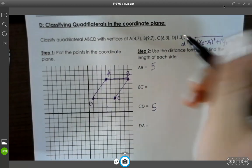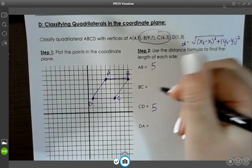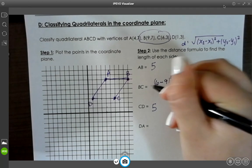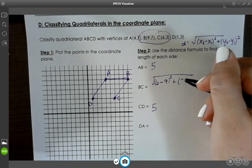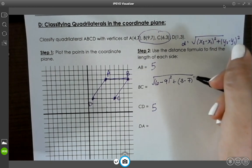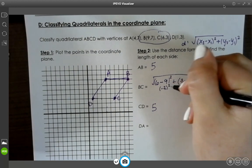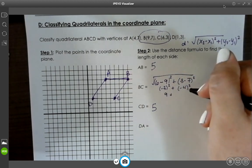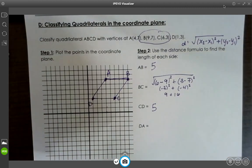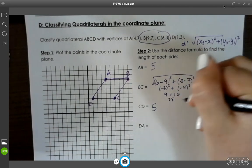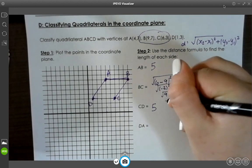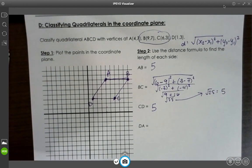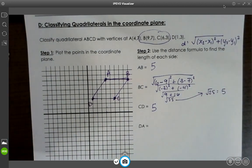So for BC, I'm looking at these numbers. BC, x2 minus x1 plus y2 minus y1. 6 minus 9, negative 3. 3 minus 7, negative 4. This is 9 plus 16. And 9 plus 16 is 25. So remember, these are all square root. I know the square root of 25 is 5.